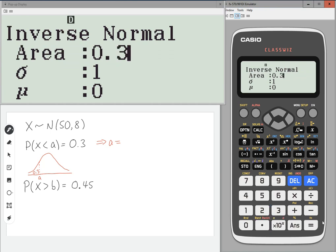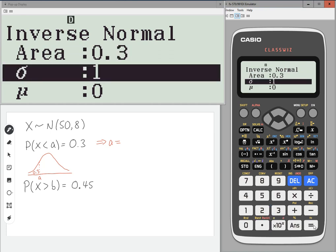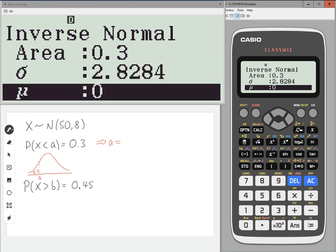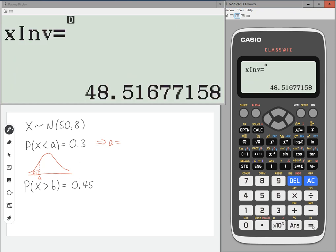So we type that in, 0.3. The sigma here is the square root of 8, standard deviation. And the mean is 50. Press equals. And so a is 48.5 to 3 significant figures.